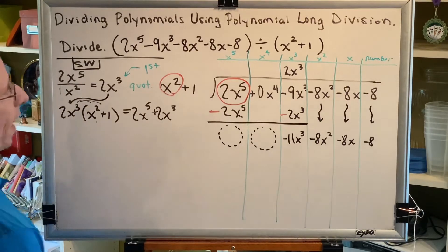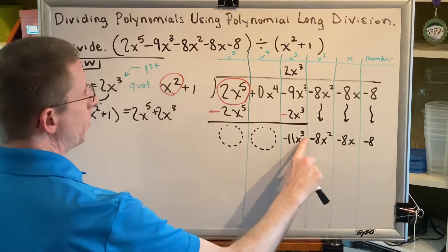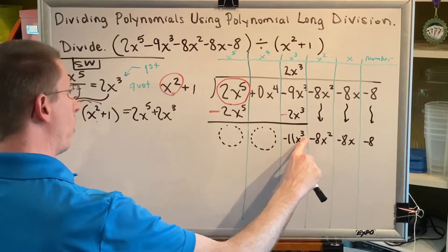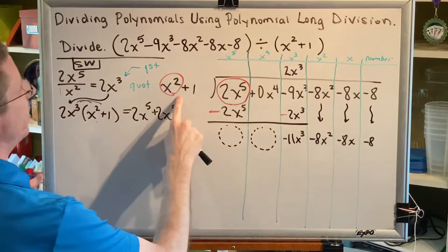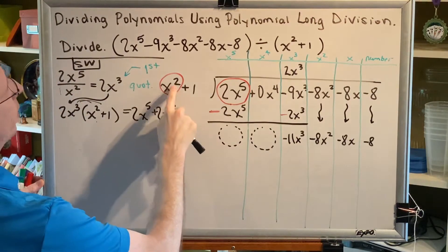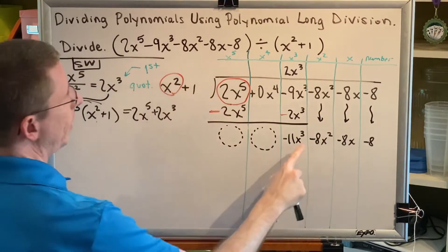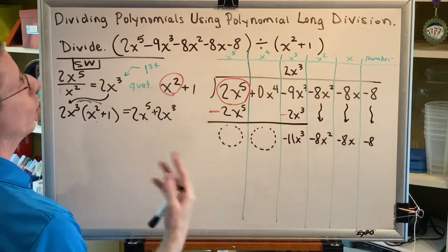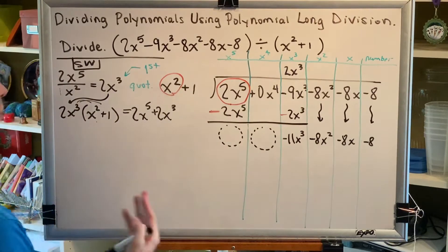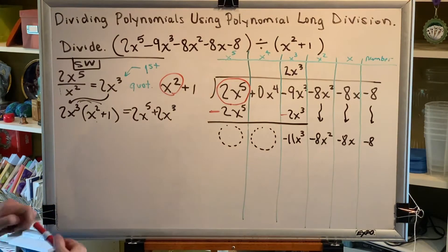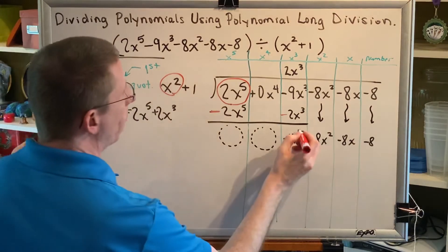The highest exponent of the lowest under is 3, and the highest exponent of the original denominator is 2. Is 3 less than 2? No. So we keep going and repeat the steps for polynomial long division.